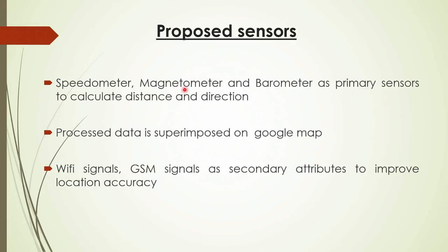So we construct a very simple speedometer. From there we use a magnetometer for all the turnings on the roads, and a barometer if you are climbing a hill of over 10–15 feet so that changes in pressure can be mapped. For the moment we will not worry about the barometer; we will concentrate on speedometer and magnetometer as primary sensors to calculate distance and direction.